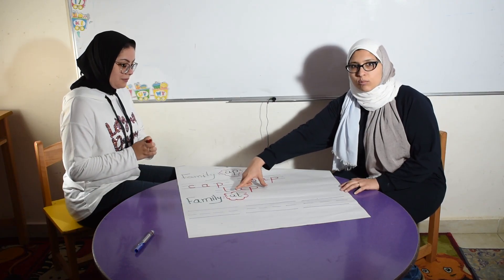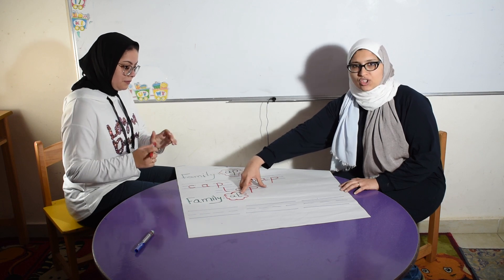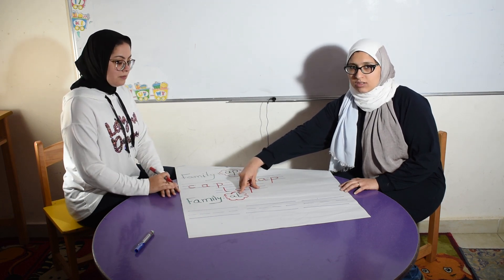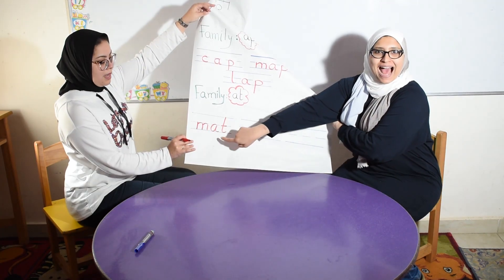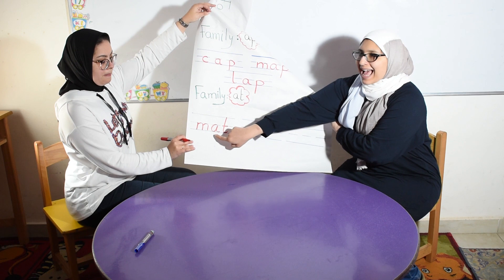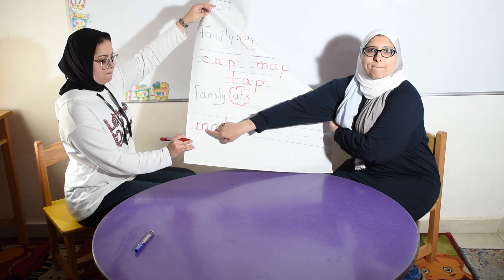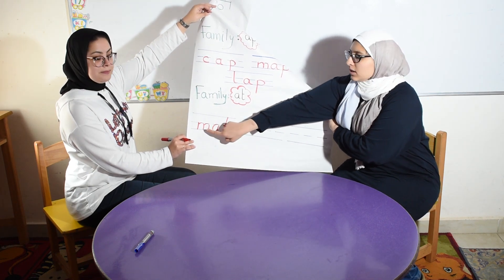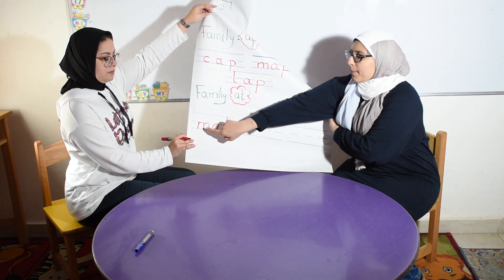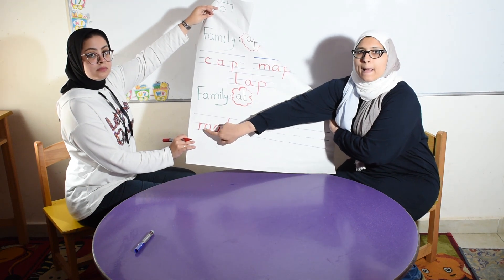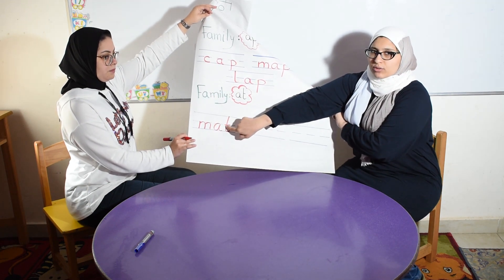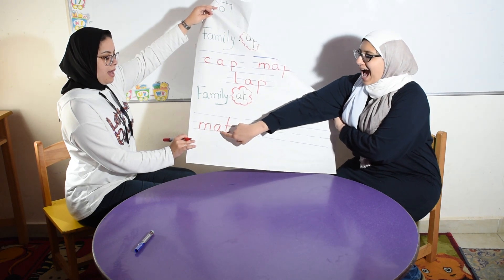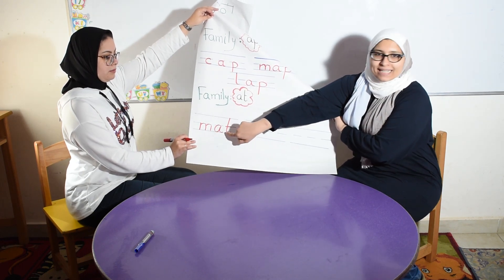The last family here, we have A, T. It's A, T. Okay? Again please. A, T. M, A, T. Man. M, A, T. Mat. Again? M, A, T. Mat. Try to read with me. M, A, T. Mat.